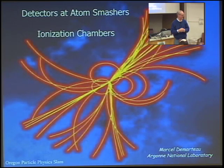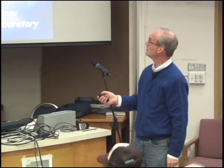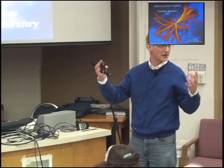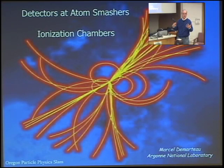So what we do with particle accelerators — we call them atom smashers — is smash atoms on top of each other and then look at what comes out. When we talk about our field, you very often see pictures like this with particle tracks emanating from the collision point.